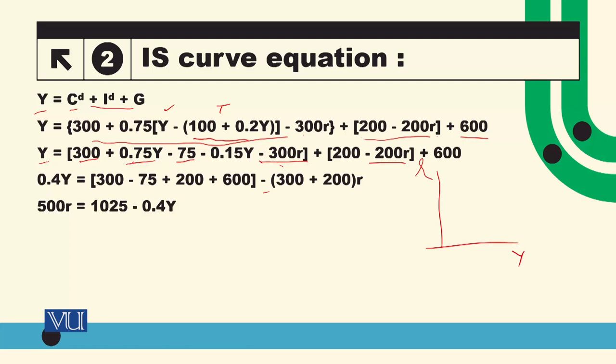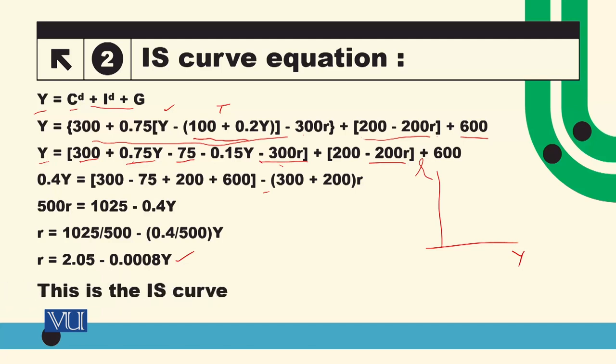After dividing, we have r is equal to 2.05 minus 0.0085Y. We have a negative relationship here, which is a negative sign showing negative relation.